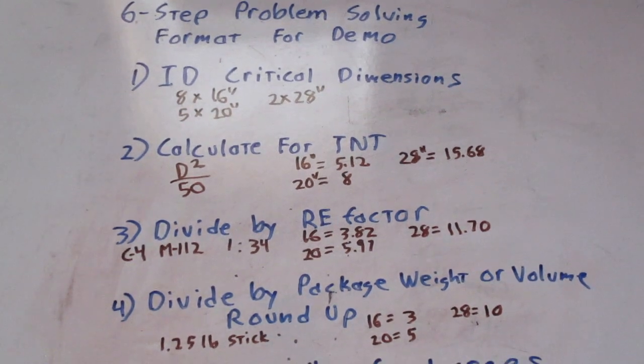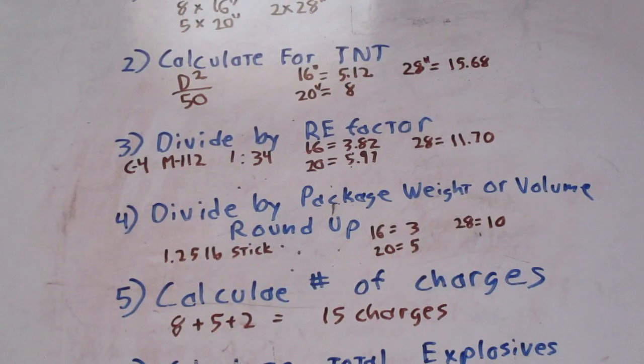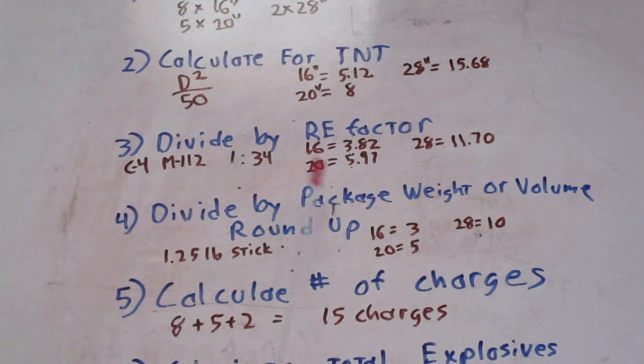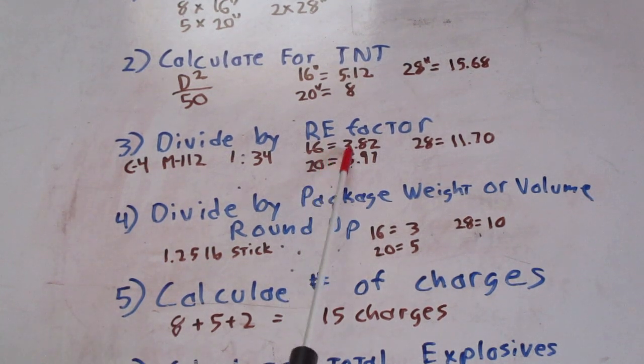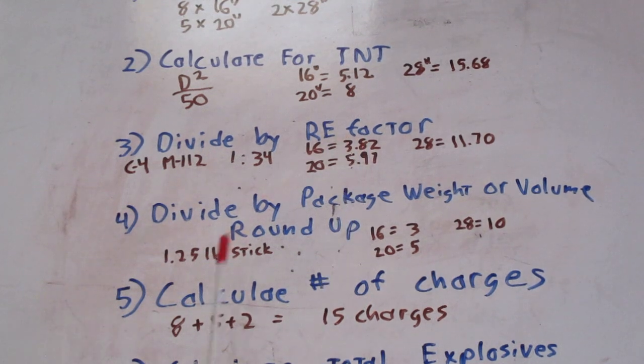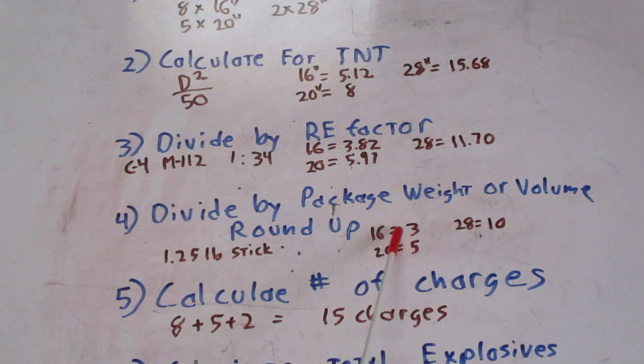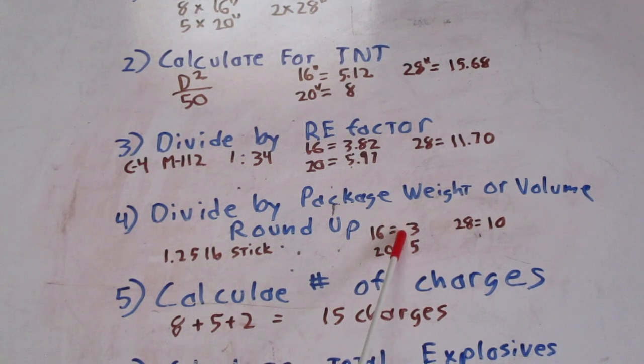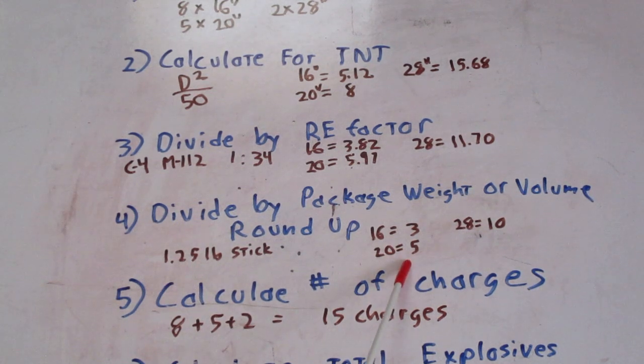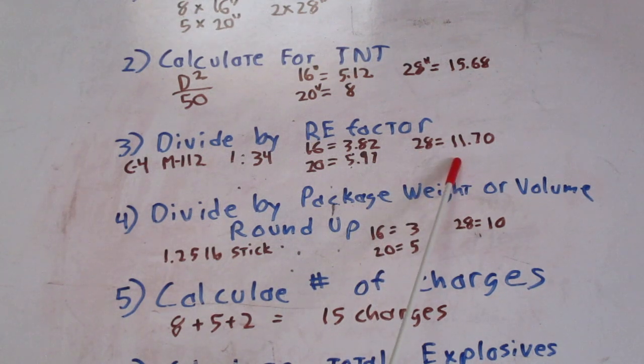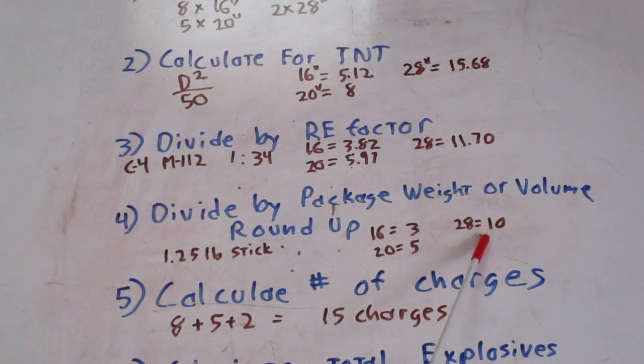Now, M112 block is 1.25 pound sticks. So we take our number for the 16 inch trees, which is 3.82, divide by the package weight, we round up. We need approximately 3 sticks per tree. Take our 20 inch. It's 5.97. Divide by the package weight, round up. 5 sticks per tree. For 28 inch trees, 11.70. Divide by package weight, round up. 10 sticks.